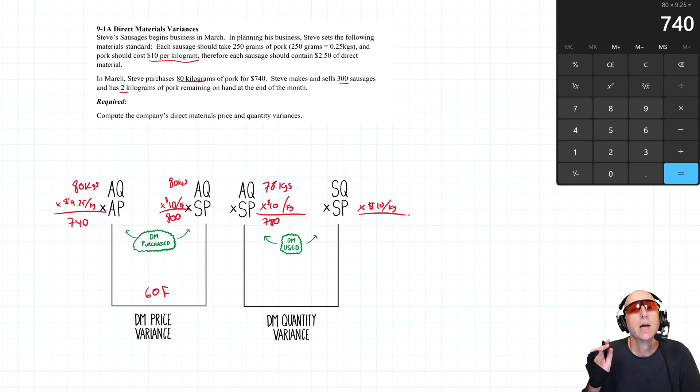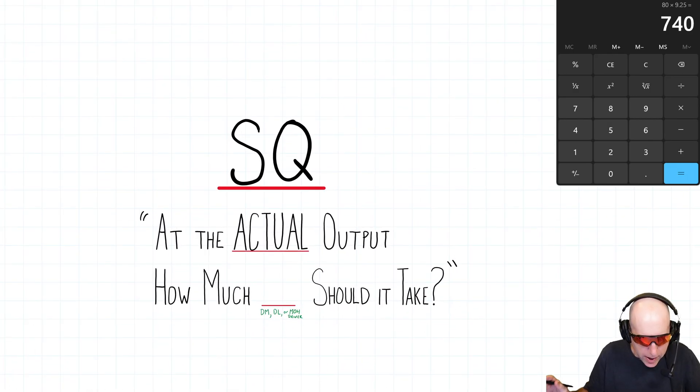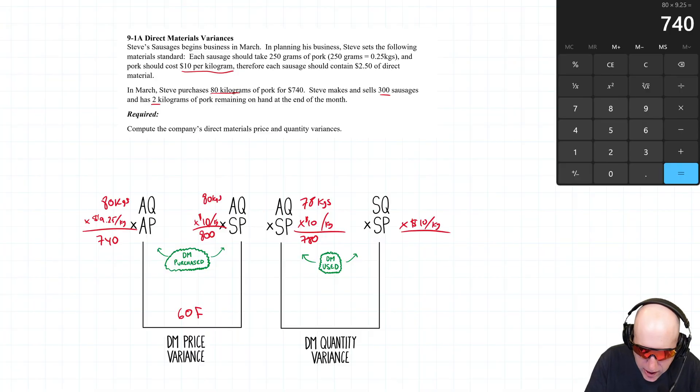So SQ, to do SQ, we need to answer this question. At the actual level of output, how much, in this case material, but we'll do it for labor and overhead, how much material should it take? So at the actual number of good units produced, how much material should it have taken? How much material would Steve have guessed it would take?